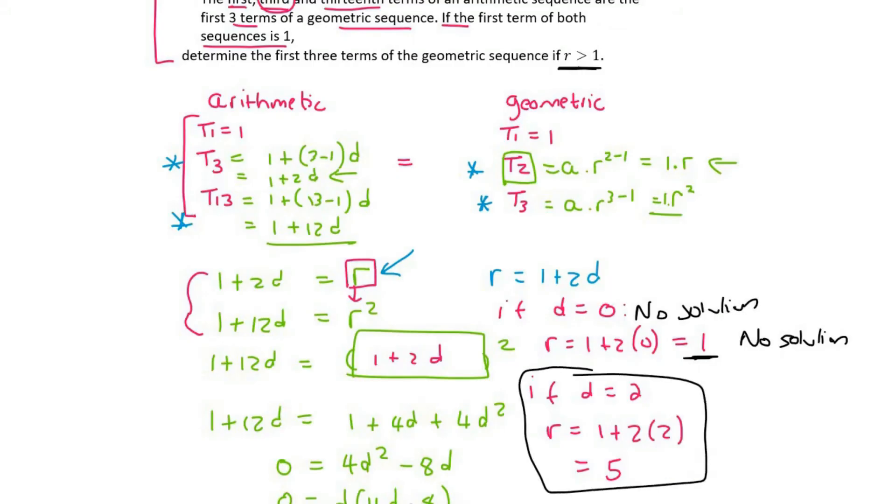Now they want the first three terms of the geometric. So we know that term 1 is already 1. Term 2 was this one. So it'll be 1 times r, which is 5. And that'll just give us 5. And then term 3 would be 1 times 5 to the power of 2, which is 25. And so those would be the first three terms of the geometric sequence.